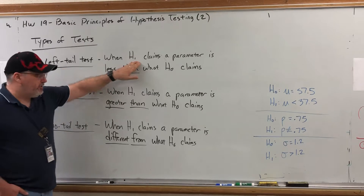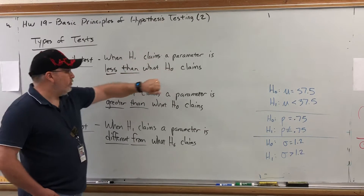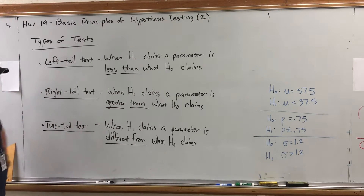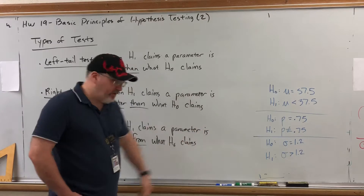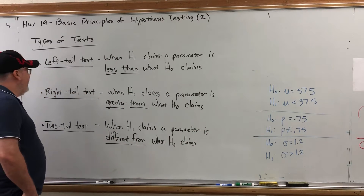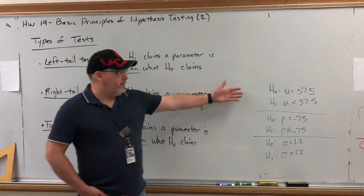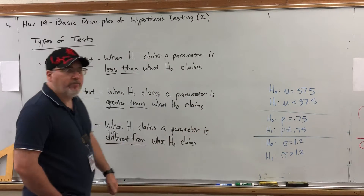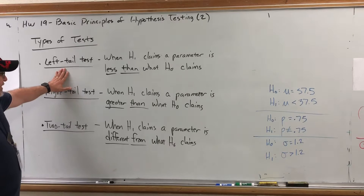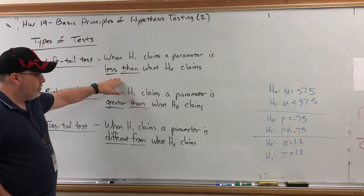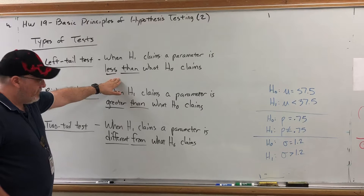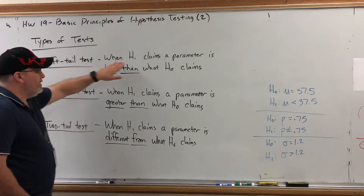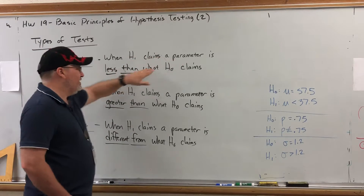A left tail test is when the alternative hypothesis H1 claims a parameter is less than what the null hypothesis claims. For example, among the three pairs of hypotheses from the first video, one would be a left tail test. A left tail test is when the alternative hypothesis claims a parameter is less than what the null claims.